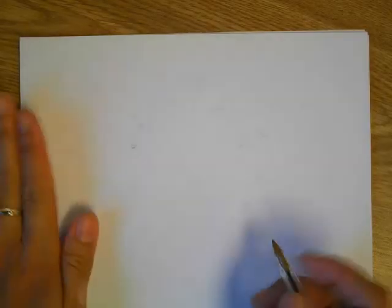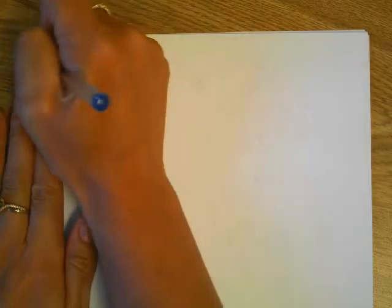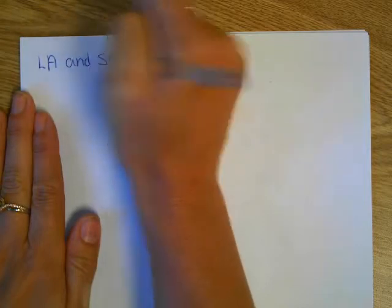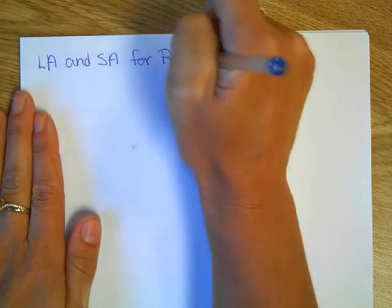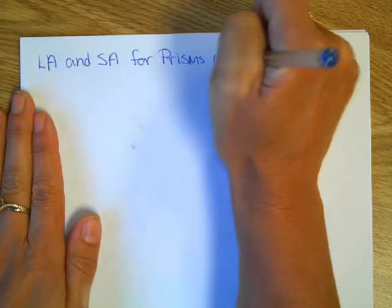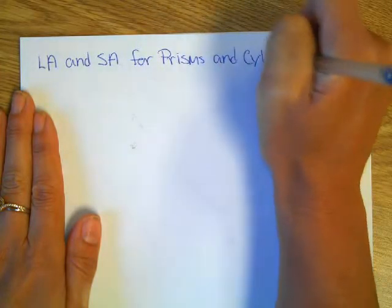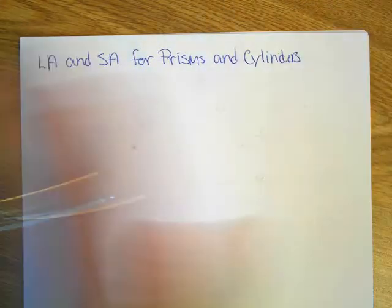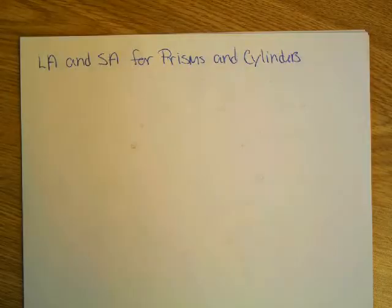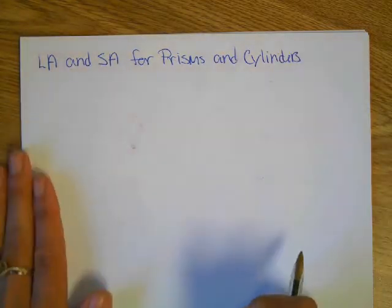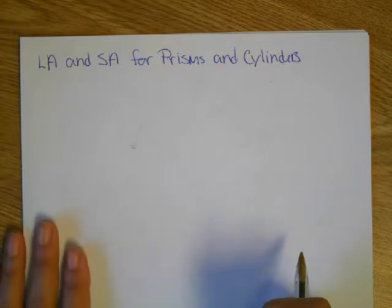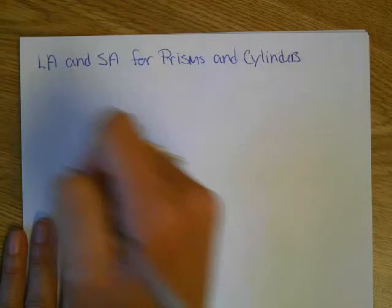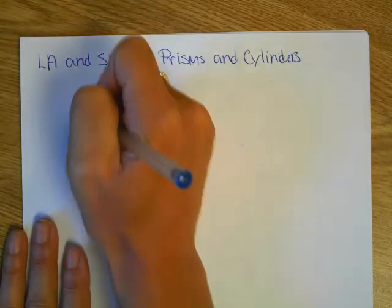Okay, we're going to try this for the third time. We're looking at lateral area and surface area for prisms and cylinders. Okay, we're going to start with a prism. I'm just going to go right into an example. I'm going to forget all that beginning stuff there.